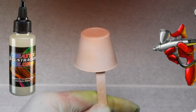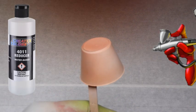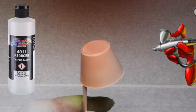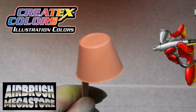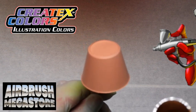Thin with 5090 transparent base or 4011 reducer. After thinning with either, the paints will store best in a light-protected and cool area. Suitable for most any airbrush tip size; for smaller tip sizes, you may need to use a little bit of reduction.